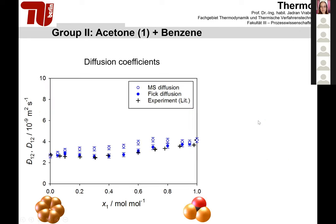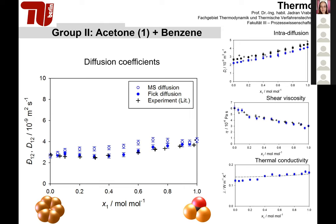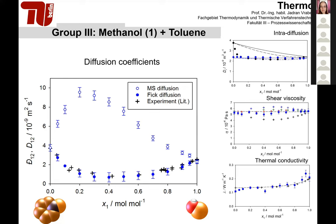A moderately non-ideal mixture is acetone plus benzene: the Fick diffusion coefficients and Maxwell-Stefan diffusion coefficients are shown, along with intra-diffusion comparisons. The most non-ideal mixture here is methanol plus toluene, where the Fick diffusion coefficient goes to a clear minimum—corroborated both experimentally and by our simulations—while the Maxwell-Stefan diffusion coefficients show a strong composition dependence and go through a maximum. We can ask where such non-ideality comes from and how to understand it.